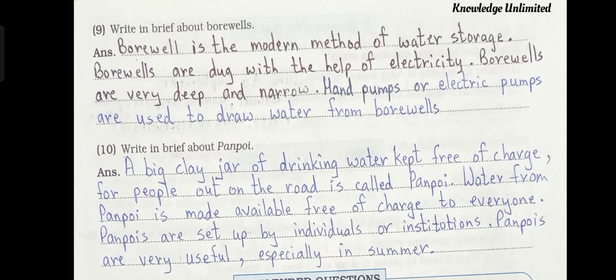Question number nine: write a brief about borewells. Answer: a borewell is the modern method of water storage. Borewells are dug with the help of electricity. Borewells are very deep and narrow. Hand pumps or electric pumps are used to draw water from borewells. Question number ten: write in brief about panpoi. Answer: a big clay jar of drinking water kept free of charge for people out on the road is called panpoi. Water from panpoi is made available free of charge to everyone. Panpois are set up by individuals or institutions and are very useful especially in summer.